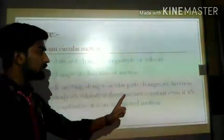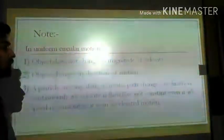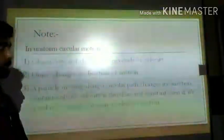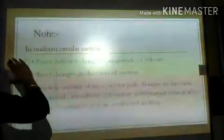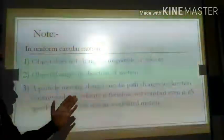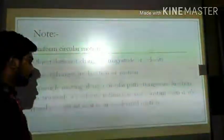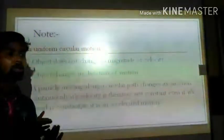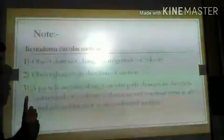The third key point: a particle moving along a circular path changes its direction continuously. Its velocity is therefore not constant, even if its speed is constant. So uniform circular motion is an accelerated motion.